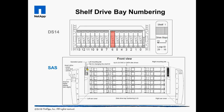Our failed drive is in bay 6. SAS shelf bays start at the top left bay and go left to right, then wrap around to the left side of the next row of disks. The shelf bezels are marked with the starting and ending bay numbers for each row to make locating a drive easier.